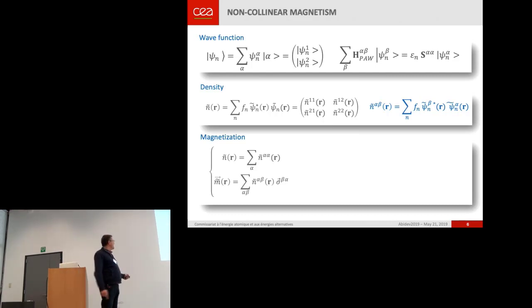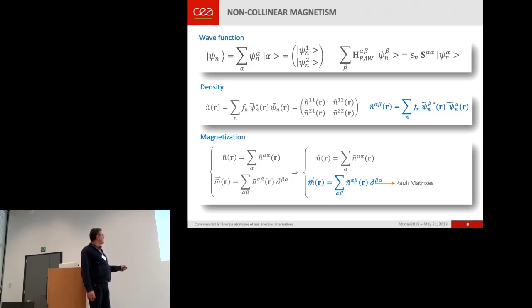And Eric didn't show that. You can go from the two-by-two matrix formalism to the density magnetization formalism via the Pauli matrices. But it's non-collinear magnetism. It's not complicated.